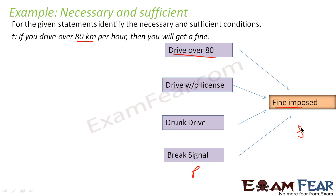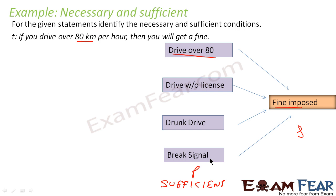So this is P and this is Q. Now we have to find necessary and sufficient condition. Driving over 80 km is a sufficient condition to get a fine, because there are other conditions also which can give you a fine. So whatever is in blue are all sufficient conditions, not necessary conditions. If you drive over 80 km, or if you drink and drive, break a signal, or drive without a license — any of these conditions being met means you will have to pay the fine.